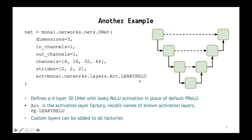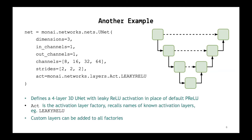Here's another example — again a UNet, but this time the images are three-dimensional. Still one channel going in, one channel going out, and you can see this time we've got a four-layer network. Interestingly, you can see that we've changed the default activation, which is by default the PReLU — we've replaced that with a leaky PReLU. And just as a final word, custom layers can be added to all factories. That's everything I wanted to say on networks.